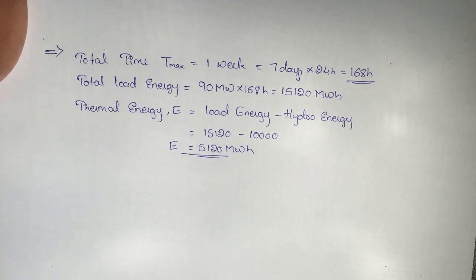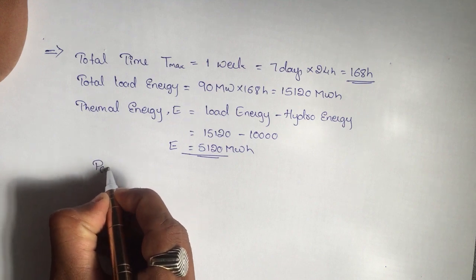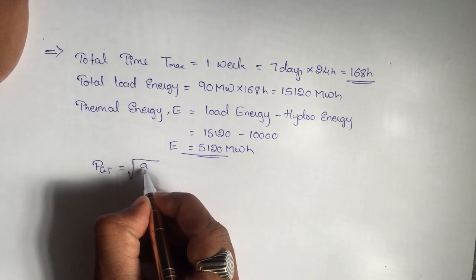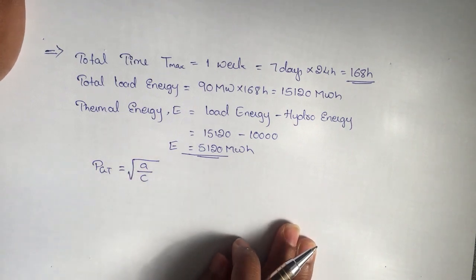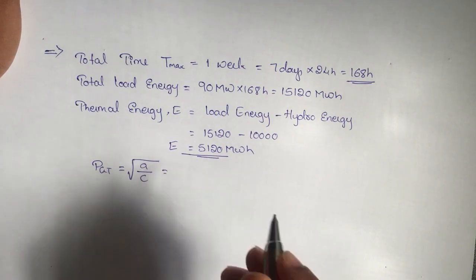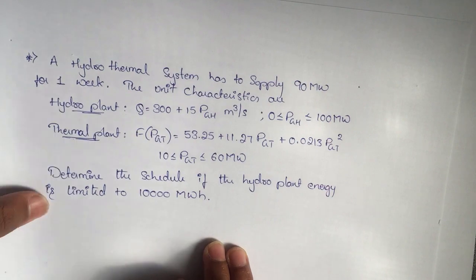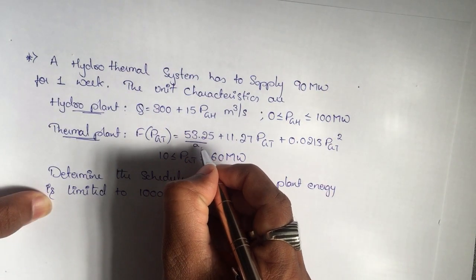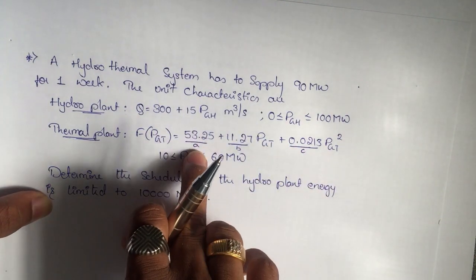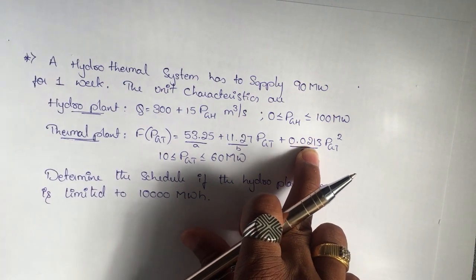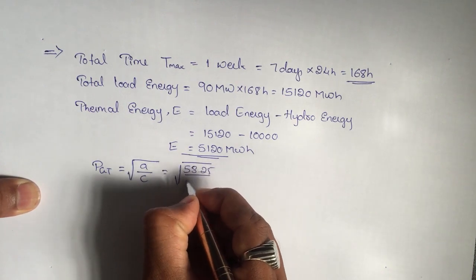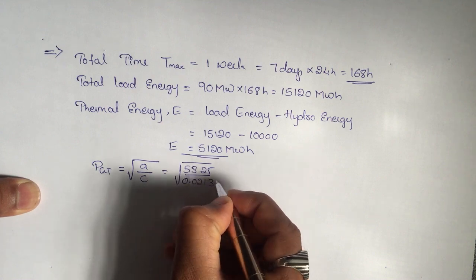Now we are going to find P_GT. Thermal power generated P_GT = √(A/C), from the energy storage equation. A and C are coefficients from the cost function: A = 53.25, B = 11.27, C = 0.0213. Substituting: P_GT = √(53.25 / 0.0213).